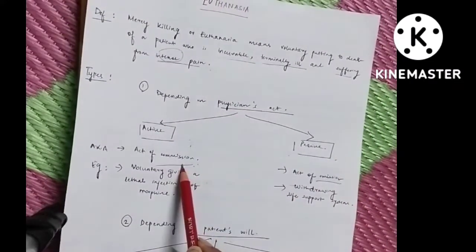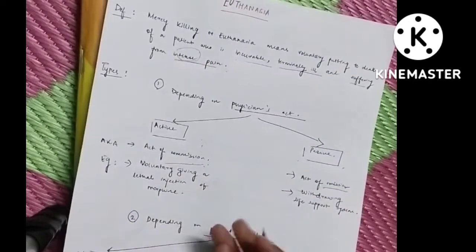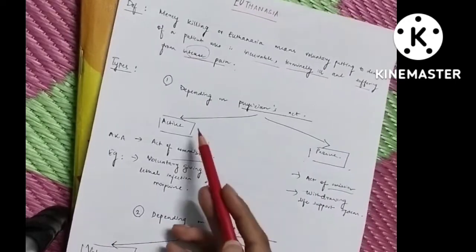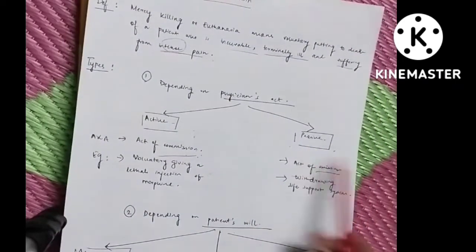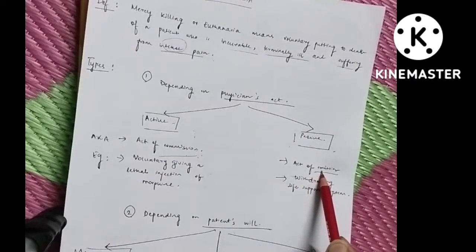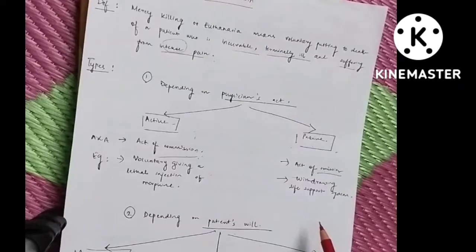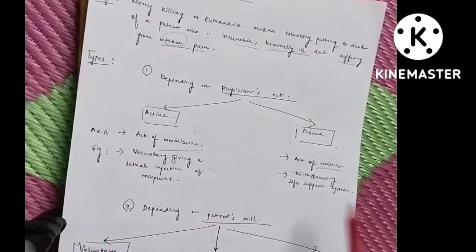What does active commission mean? That means the physician or the doctor is voluntarily injecting a lethal drug to the patient. This is active commission or active euthanasia by the physician. Now we have passive euthanasia by the physician or act of omission. This means that there is a removal of the life support of that terminally ill or incurable patient, so you're removing the life support and thus you are causing the death of the patient.